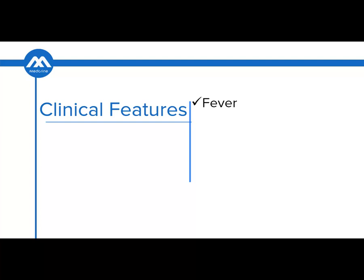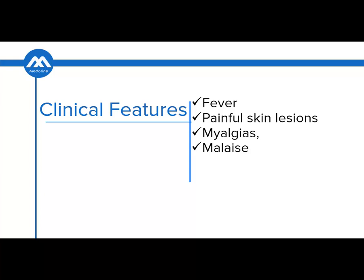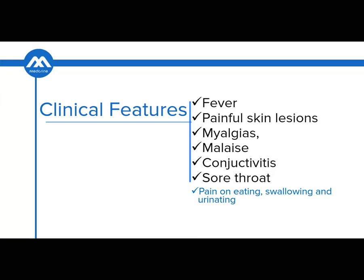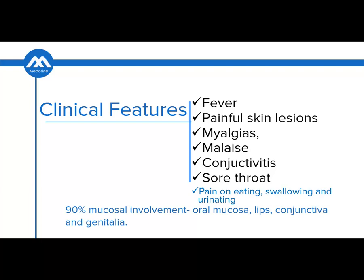A patient with Steven Johnson syndrome will present with fevers of more than 39 degrees Celsius, painful skin lesions, myalgia or muscle pains, generalised body malaise, conjunctivitis, sore throat, and these patients will complain of pain on eating, swallowing, and urinating because of involvement of the urethra. 90% of these patients will present with involvement of the mucosa such as the oral mucosa, the lips, the conjunctiva and the genitalia.